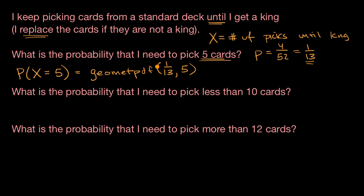Now, just to be clear, if you're doing this on an AP statistics exam, and this is one of the reasons why a calculator is useful — you actually can use this on an AP statistics exam — it's important to tell the graders, if you're doing the free response, that this right over here is your p and that this right over here is your five, just so it's very clear where you got this information from. But let's just see how it works and what this probability actually amounts to.